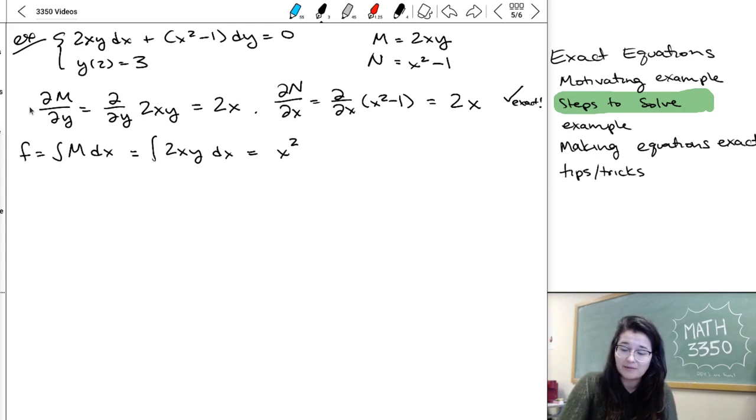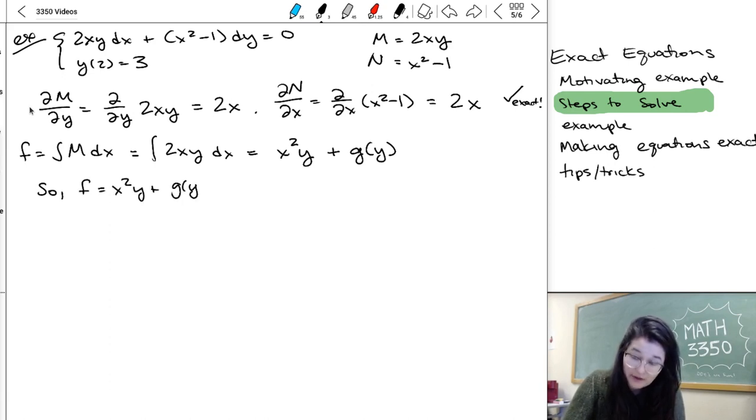So we've got an x squared, 2x becomes x squared, times y. And then, this is when that g of y shows up. Because since I integrated with respect to x, but this function clearly has y's in it, then there might be something that depends on y in f that didn't show up here. This might be familiar if you remember from calc 3, taking integrals with respect to variables or partial derivatives with respect to variables.